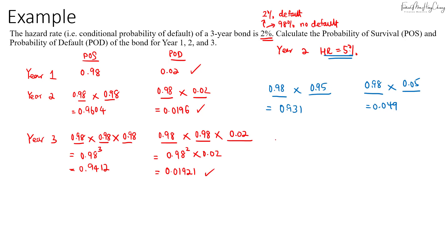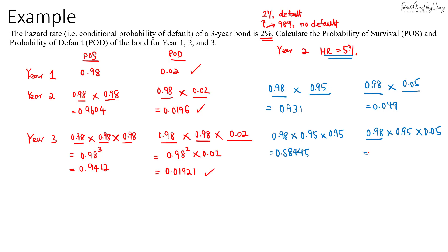For year three, if the hazard rate stays at five percent, surviving all three years gives 0.98 times 0.95 times 0.95, which equals 0.88445. Defaulting in year three means surviving years one and two then defaulting in year three, giving 0.04655. Be careful if the hazard rate changes — for year one, the calculation is unchanged; it only changes starting from year two.